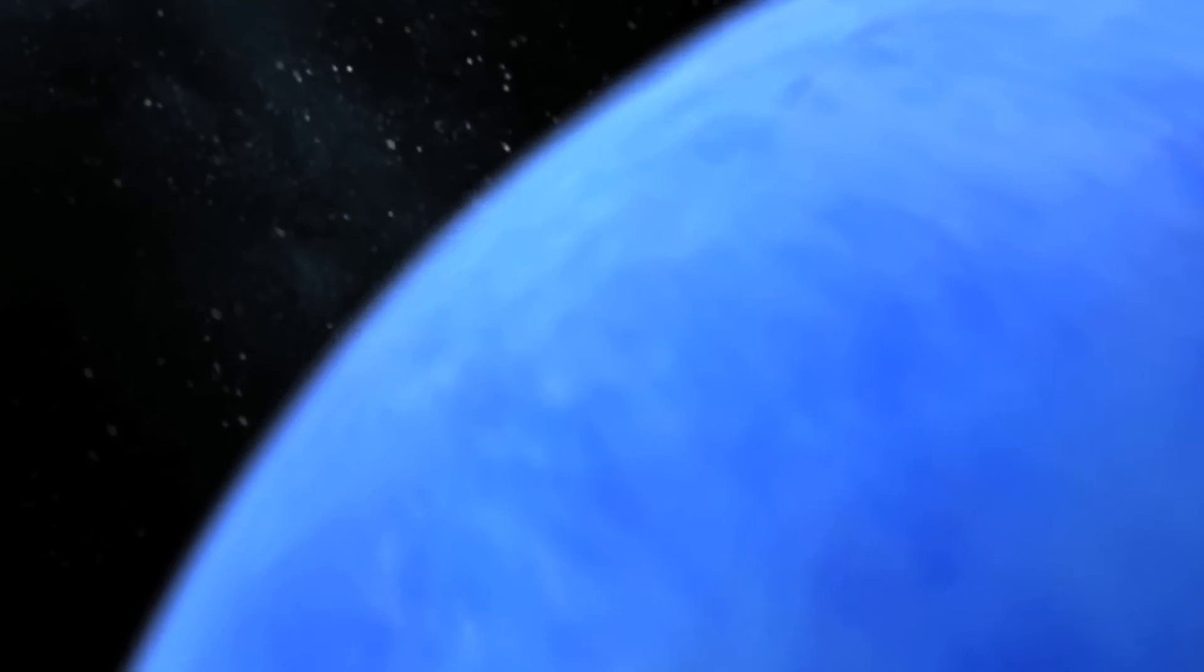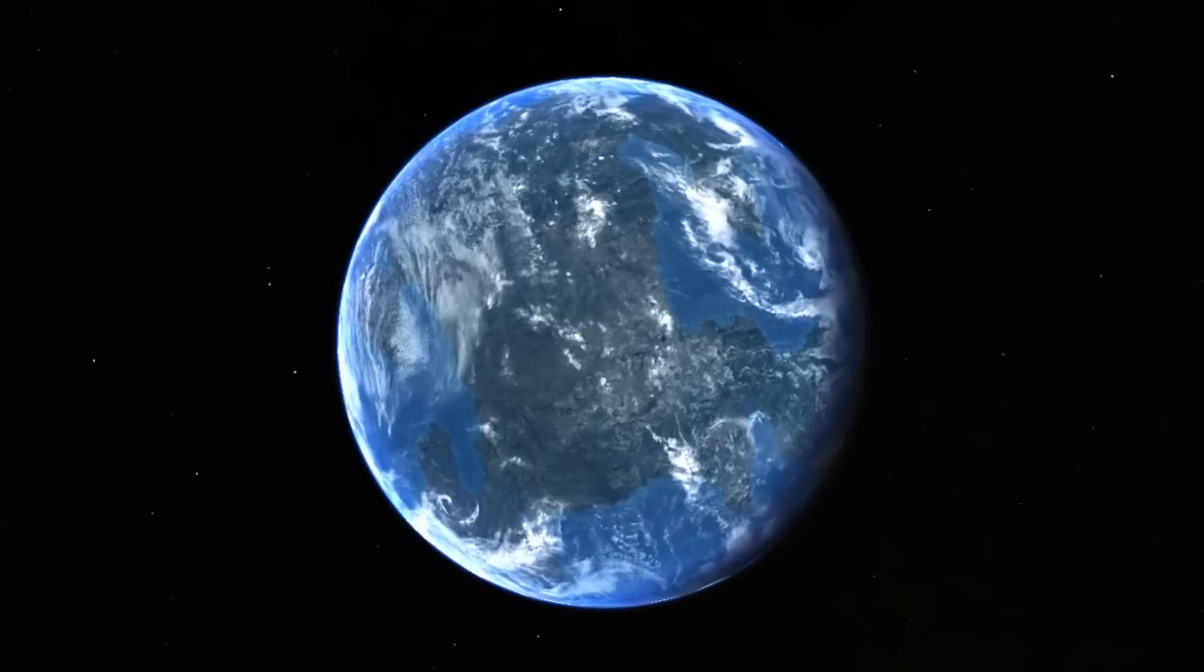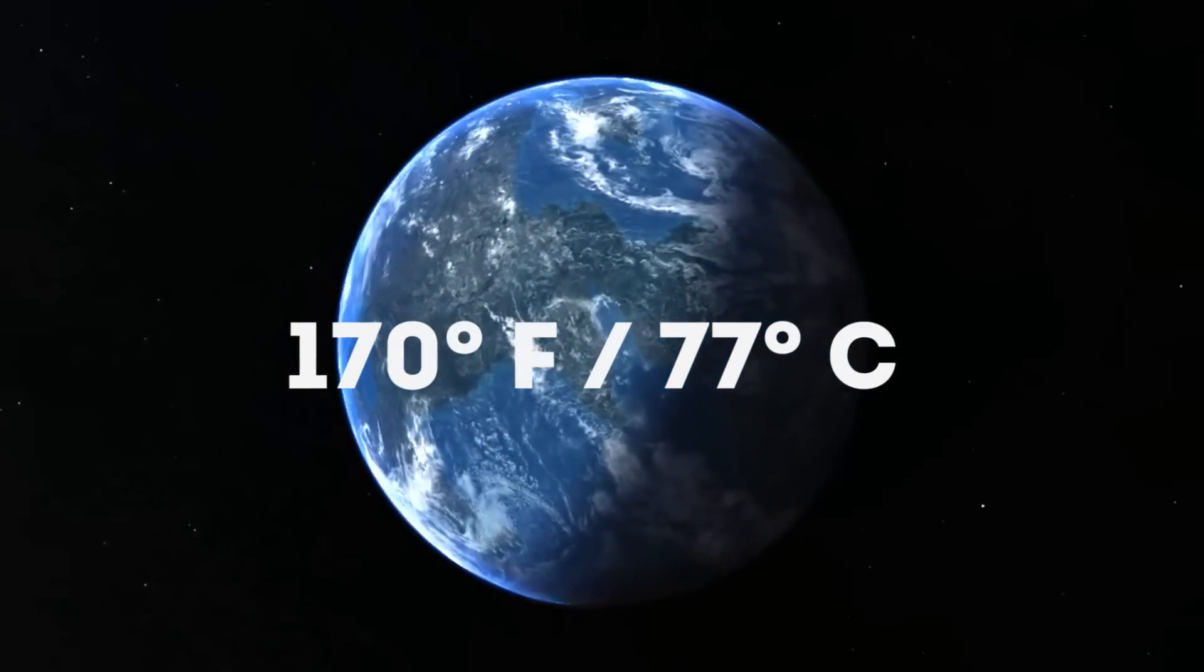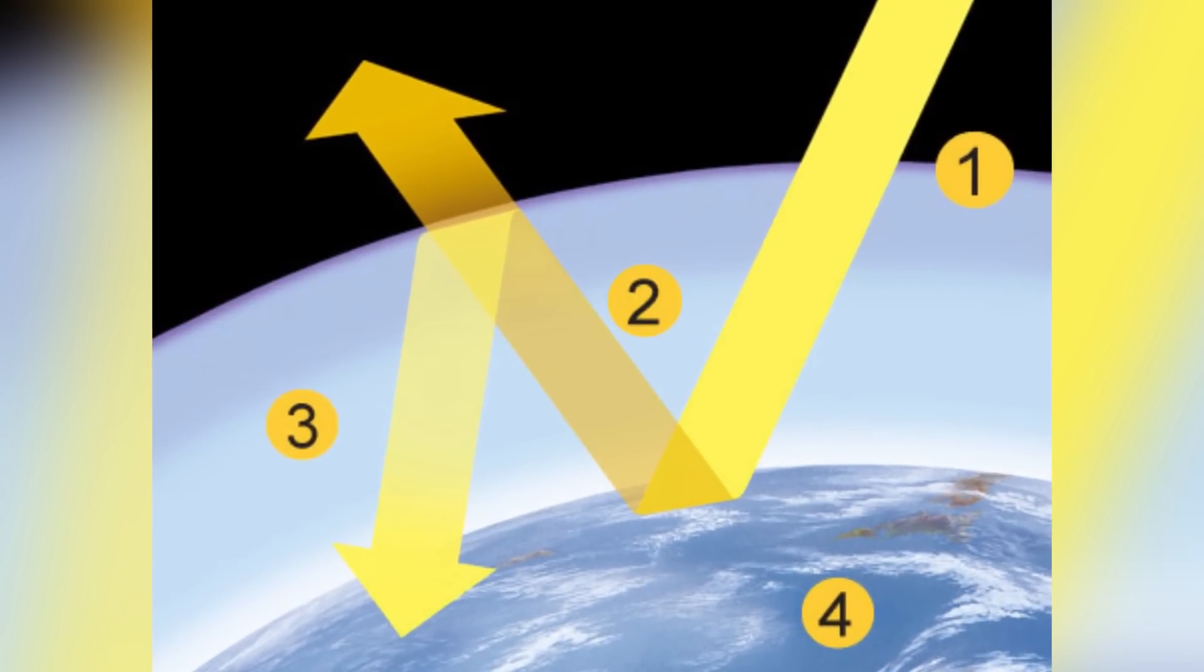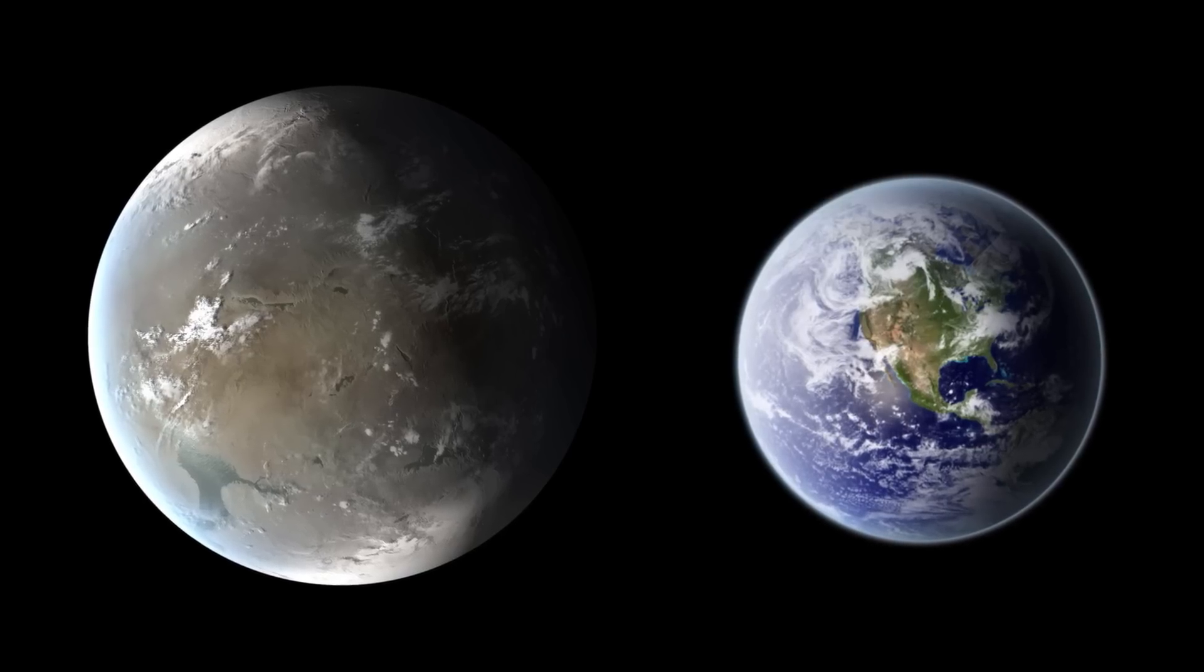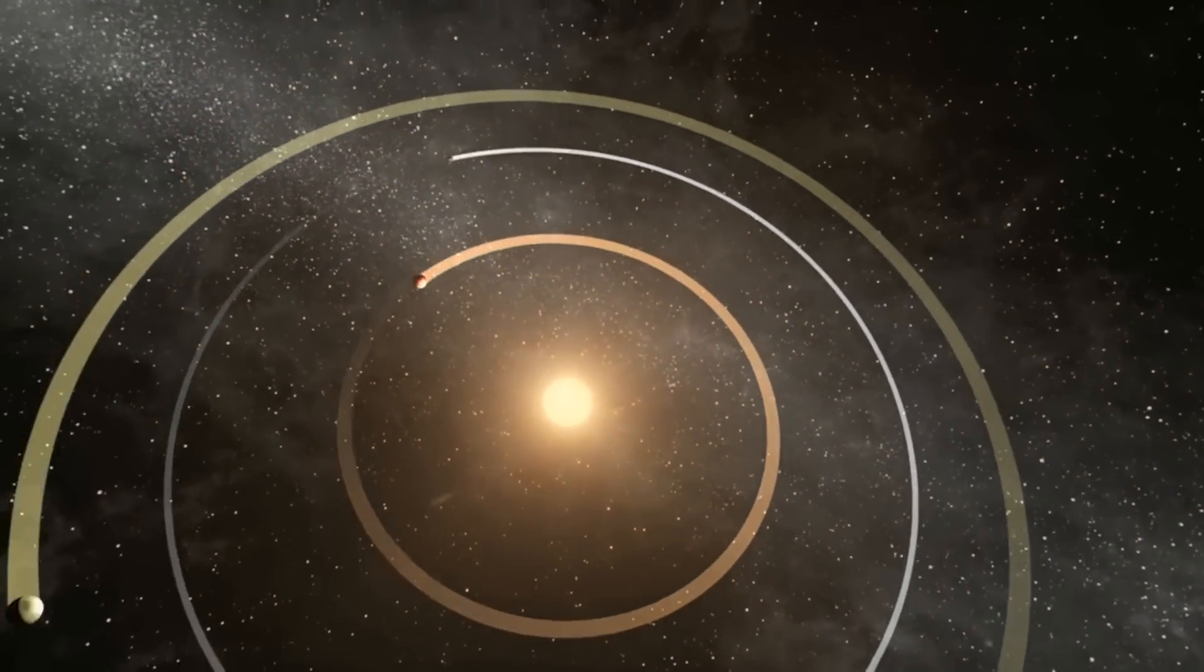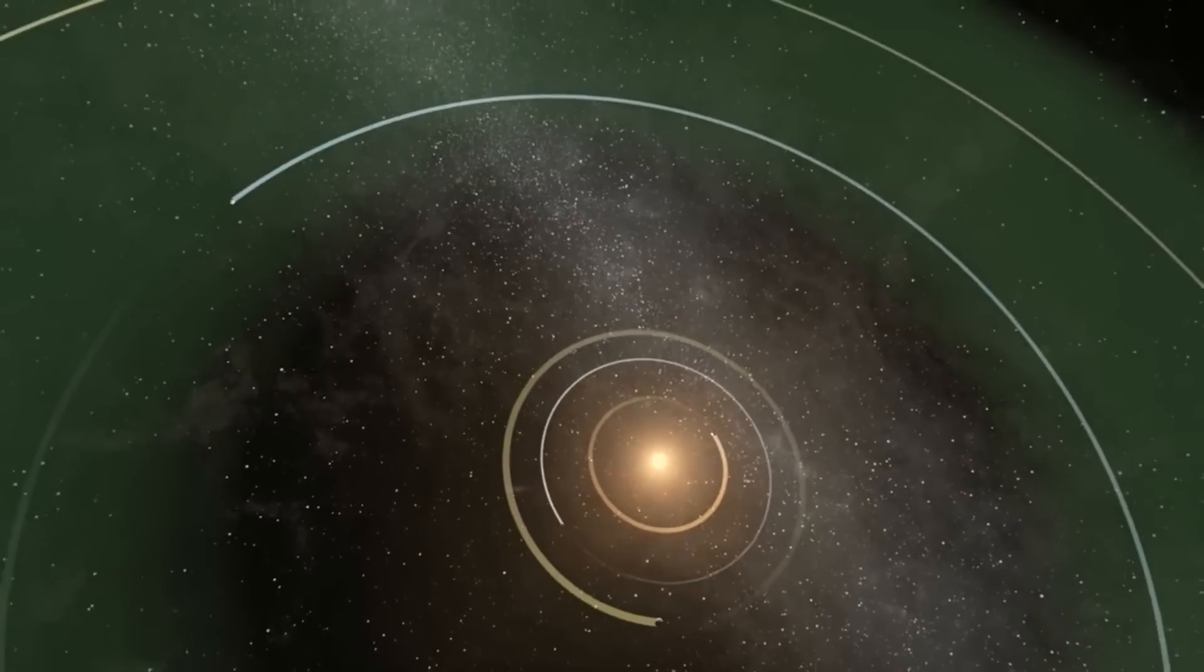One factor working against 62e as a habitable zone is the 20% increase in stellar flux from what we experience on Earth, which can trigger temperatures as high as 170 degrees Fahrenheit or about 77 degrees Celsius and start a detrimental greenhouse effect. In relation to Earth, 62e is 60% larger and orbits the Kepler-62 star 243 days quicker and receives 20% more sunlight than Earth does.